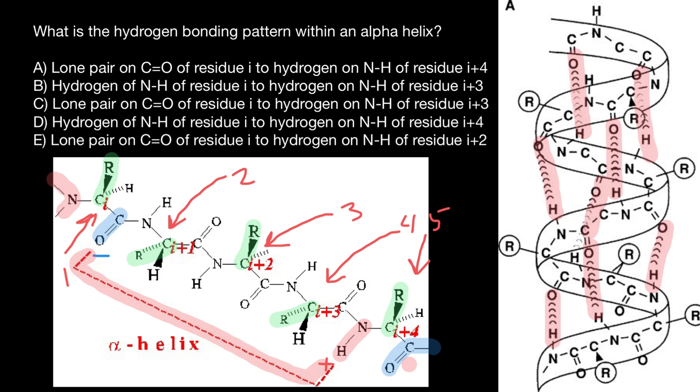Now we can choose the correct answer. And this is going to be answer A, the lone pair of carboxyl residue to the hydrogen in the amino group of the residue four amino acids downstream. Or we also can say this is going to be fifth amino acid. Another way to say between the first and the fifth is going to be three amino acids in between.